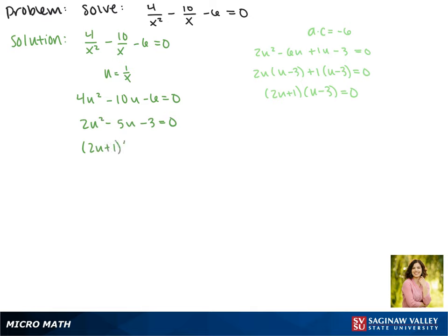So again, that's 2u plus 1 times u minus 3 equals 0, and now we'll take turns setting each one equal to 0. So 2u plus 1 equals 0, or u minus 3 equals 0.